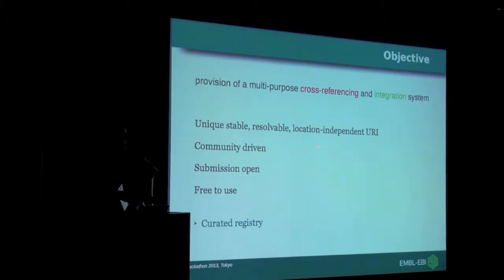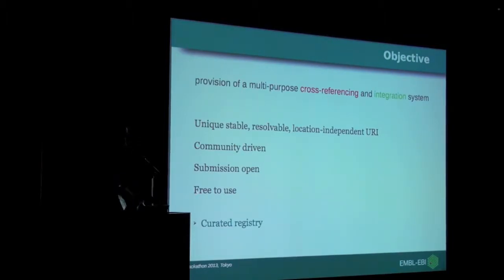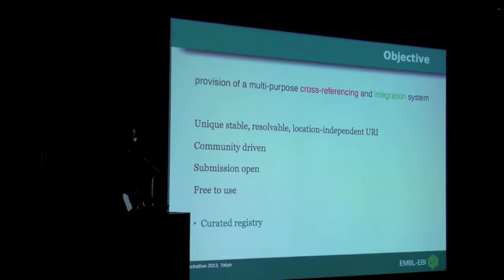What we do is provide location-independent URIs. Because they're location-independent, it makes them stable, and within those URIs we provide information on where you can actually map to the data behind it. It's an open submission system so anyone is free to ask to have information added and to provide URIs they might want to use. It's also free to use for both academic and commercial institutions, so it's completely open. What we end up with is a curated registry, because we maintain the accuracy and consistency of the information we store.